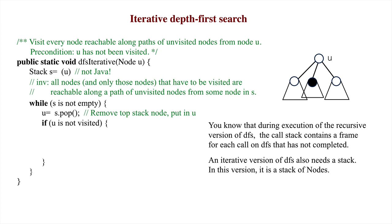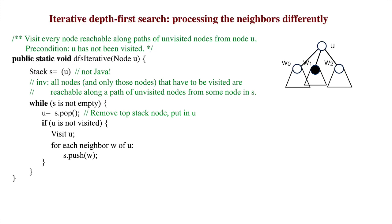If the popped node is already visited, there's nothing to do. Otherwise, U is visited and all neighbors of U are pushed onto the stack in order to again truthify the invariant. That ends the development of an iterative version of depth-first search.